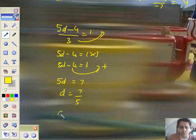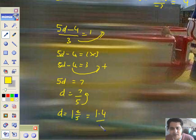3 plus 4 is 7. 5d equals 7. D equals 7 over 5. Don't leave it like that. It's horrible. D equals, well, 5 goes into 7 one whole time and 2 left over. 1 and 2 fifths. If you don't like fractions, decimals, 1.4. As for me, I prefer the fractions. Anyway, I've got a calculator to help me in case I get stuck.